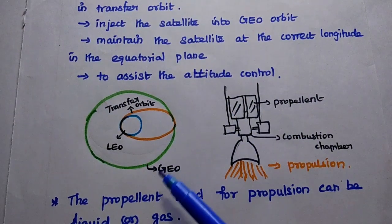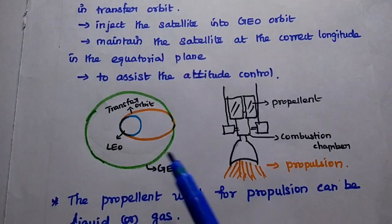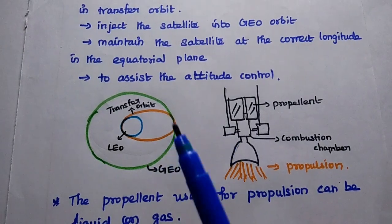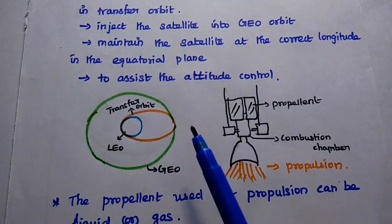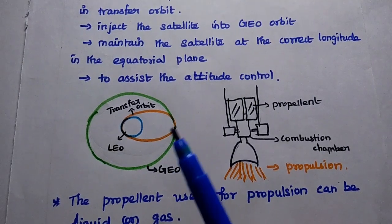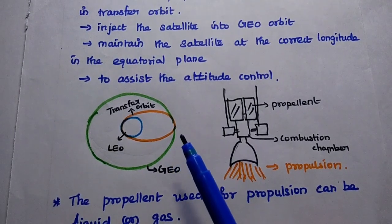In this diagram, we can explain the concept of propulsion subsystem. Launching the satellite into geostationary orbit is complex, so to make it simple, we use one more orbit between LEO and GEO, which is the transfer orbit.